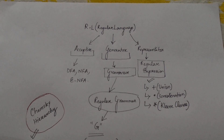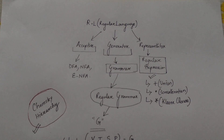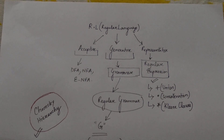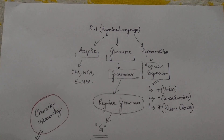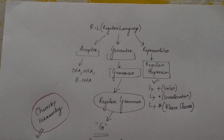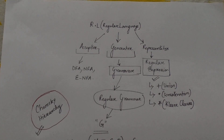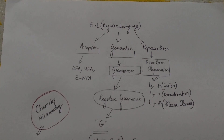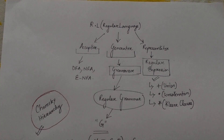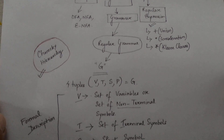We are going to study context-free grammar, but before that we will understand what regular grammar is all about. If you understand regular grammar, then context-free grammar has only a small difference in the production rule. There is also a topic called Chomsky hierarchy, which represents the levels of grammars, languages, and acceptors — we will cover it a little later after understanding regular grammar.